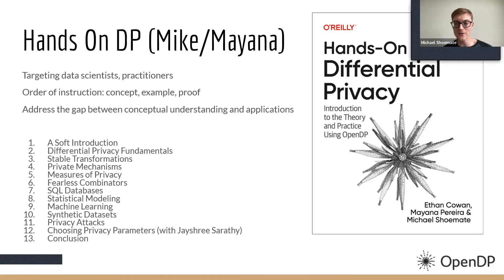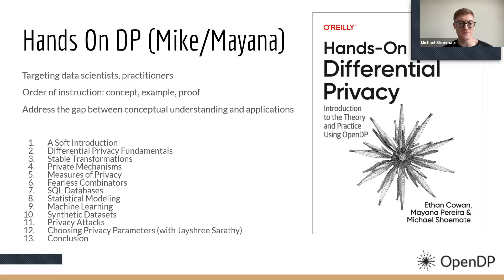The style we're using throughout the book is to introduce a concept, provide runnable code, and then either provide an annotated proof to enrich understanding or indicate where to find a proof. We're trying to find a balance where people who do not consider themselves mathematicians can still feel comfortable with the content, while also cultivating a fundamental understanding of differential privacy that requires some math. The mathematical parts are heavily annotated to keep them connected with intuition.